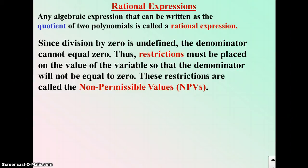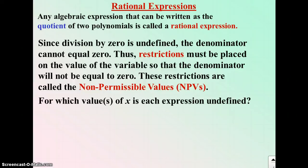Since division by zero is undefined, the denominator can never equal zero. So just like when we were learning about rational expressions, we're going to have restrictions on the value of the variable in the denominator. As it can never equal zero, we call these restrictions non-permissible values.